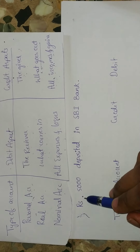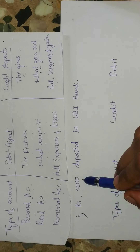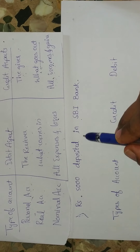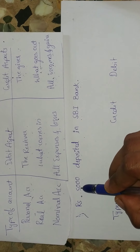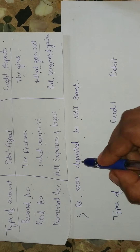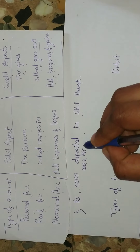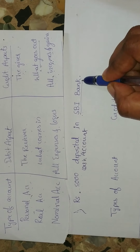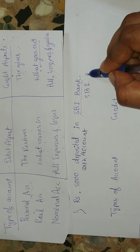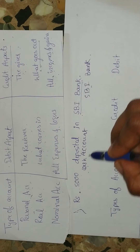The first transaction: rupees five thousand deposited in SPI Bank. We have five thousand rupees and we are going to deposit this amount in SPI Bank. So what are we going to pay here? Rupees five thousand — this is called the cash account. And in which bank are we going to pay? We are going to pay in SPI Bank. These are the two accounts this transaction is going to affect: cash account and SPI Bank.